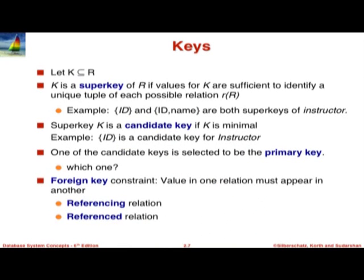A super key is said to be a candidate key if it is minimal. For example, is ID-name a super key? Yes, it is. Is it minimal? No, because even if you drop name, ID by itself is still a super key. Therefore ID-name is not minimal and cannot be a candidate key. On the other hand, ID by itself is a candidate key because it is a super key and it is minimal.